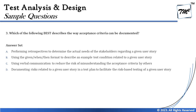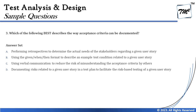Question 3 reads: 'Which of the following best describes the way acceptance criteria can be documented?' Two things to remember: you should know what acceptance criteria is, and second, the word 'best' is a catch — there might be conflicting or partially correct answers. Whenever you see the word 'best,' prepare your mind for conflicting answers and read the full option before making a decision.